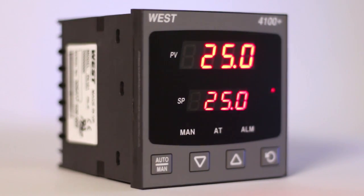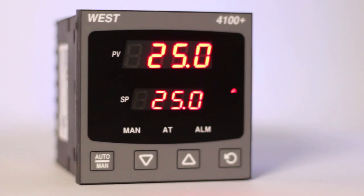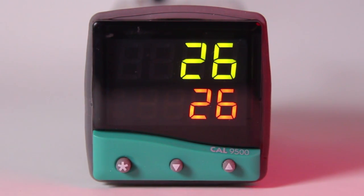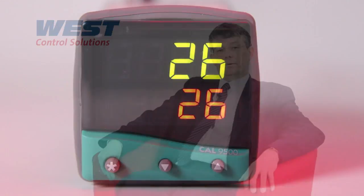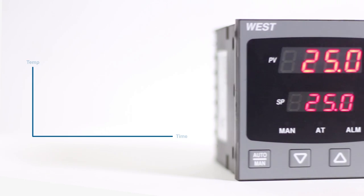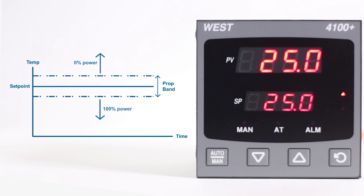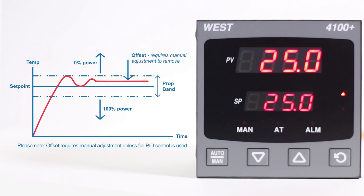A proportional controller doesn't just turn its output states to on or off — it can adjust them anywhere between 0 and 100% of available power. The direction of output is still important with proportional control. With reverse acting, the process is slowly moved from 100% through to 0% as the process rises. With direct acting outputs, the process will move from 100% to 0% as the process falls. If the process is properly tuned, the output power from the controller will precisely match the requirements of the process and therefore achieve completely stable control. This is something that is not possible with on-off control.